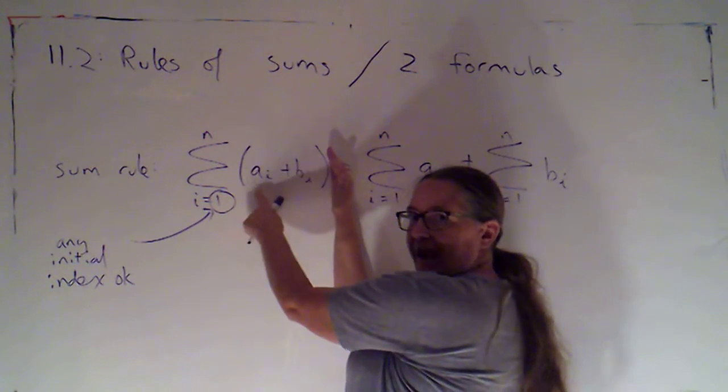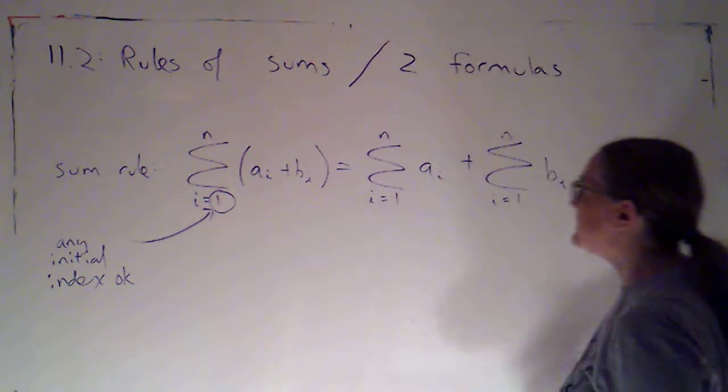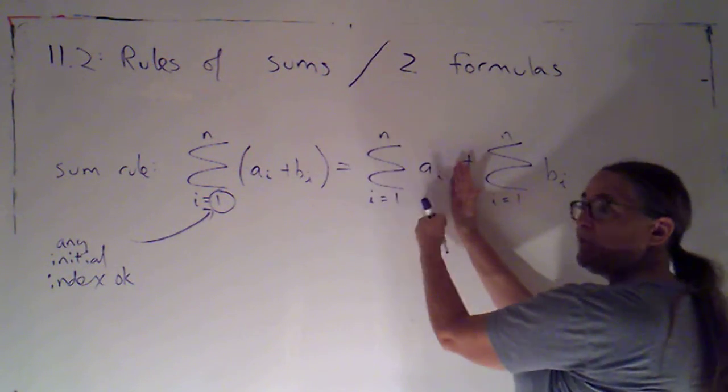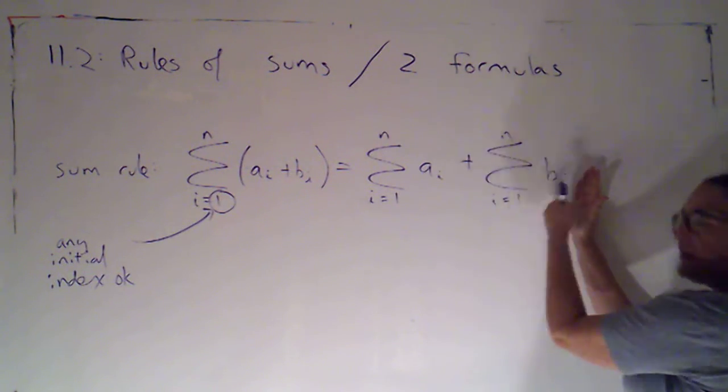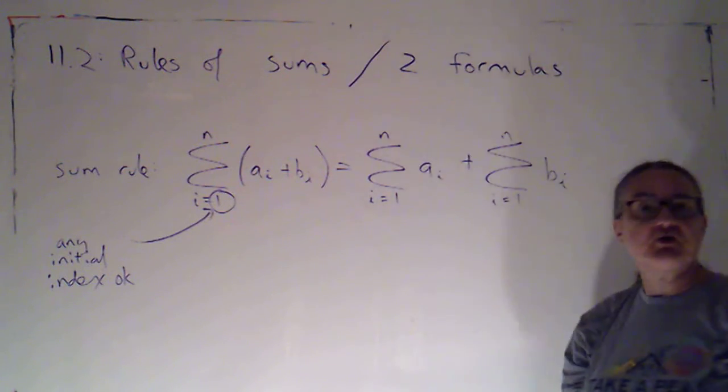But the terms come in two parts. They have an A part and a B part. And what the rule says is you can add up all of the A parts first, add up all of the B parts separately, and then add those two results.